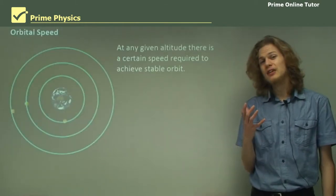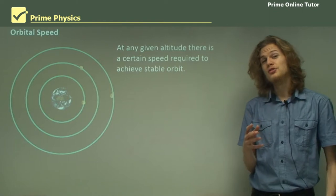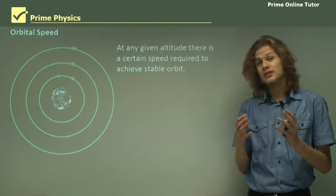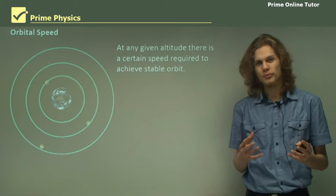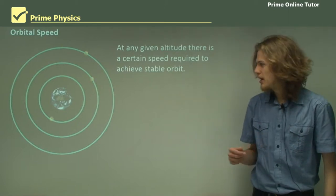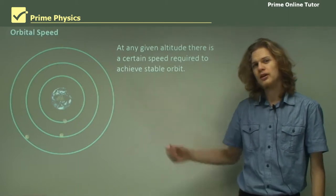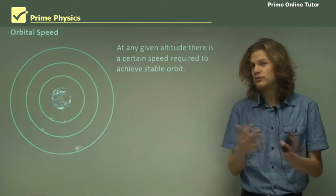Now we know that at any given altitude there is going to be a particular speed for which an object is in a stable circular orbit. We can see that if we're further out from a planet then our orbital velocity will be slower than if we're closer in.